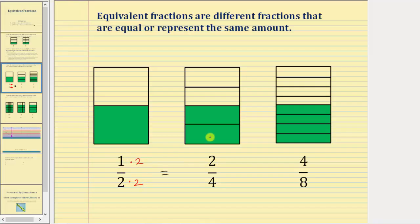One times two is two, and two times two is four. Notice how by multiplying the numerator and denominator by a whole number, what we're doing is representing the amount using smaller pieces.